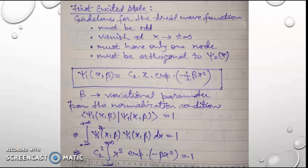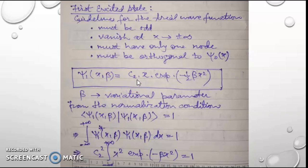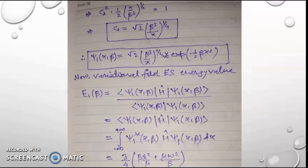Now we will go to the first excited state. Here we again select a trial wave function. In the first excited state, the trial wave function must be odd, must vanish at x equal to plus and minus infinity, must have only one node, and must be orthogonal to ψ₀(x). With these guidelines in mind, we take β as the variational parameter and write ψ₁(x, β) = c₂ x exp(−½βx²). From the normalization condition, we obtain the expression for the amplitude c₂, given in the result box.